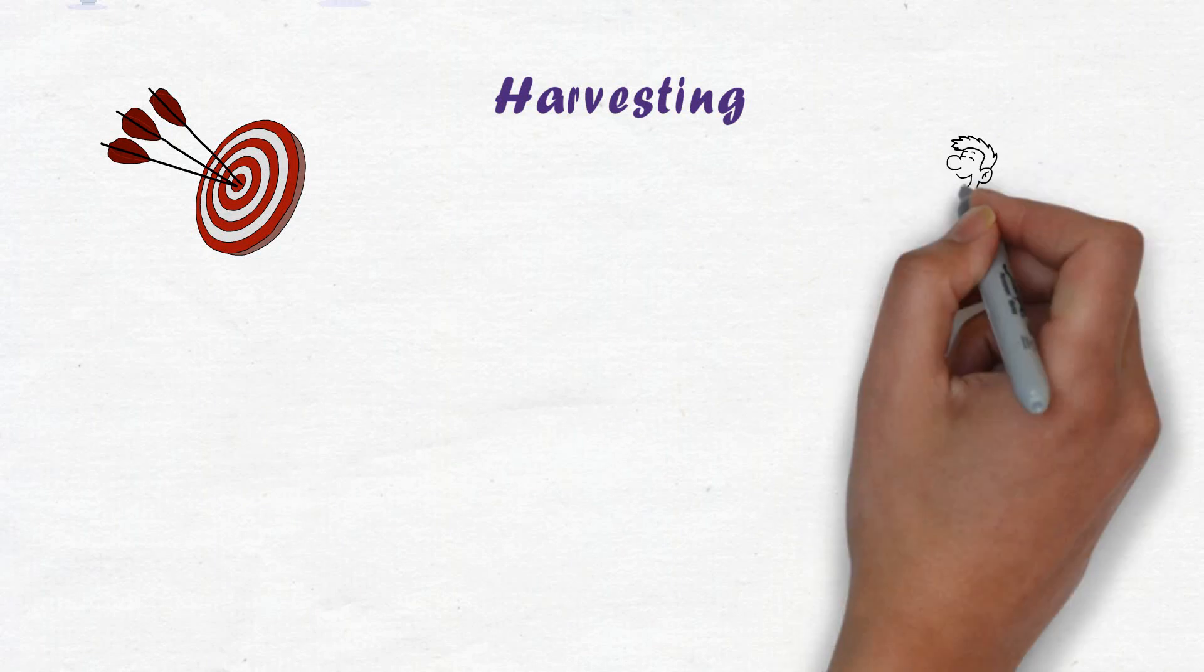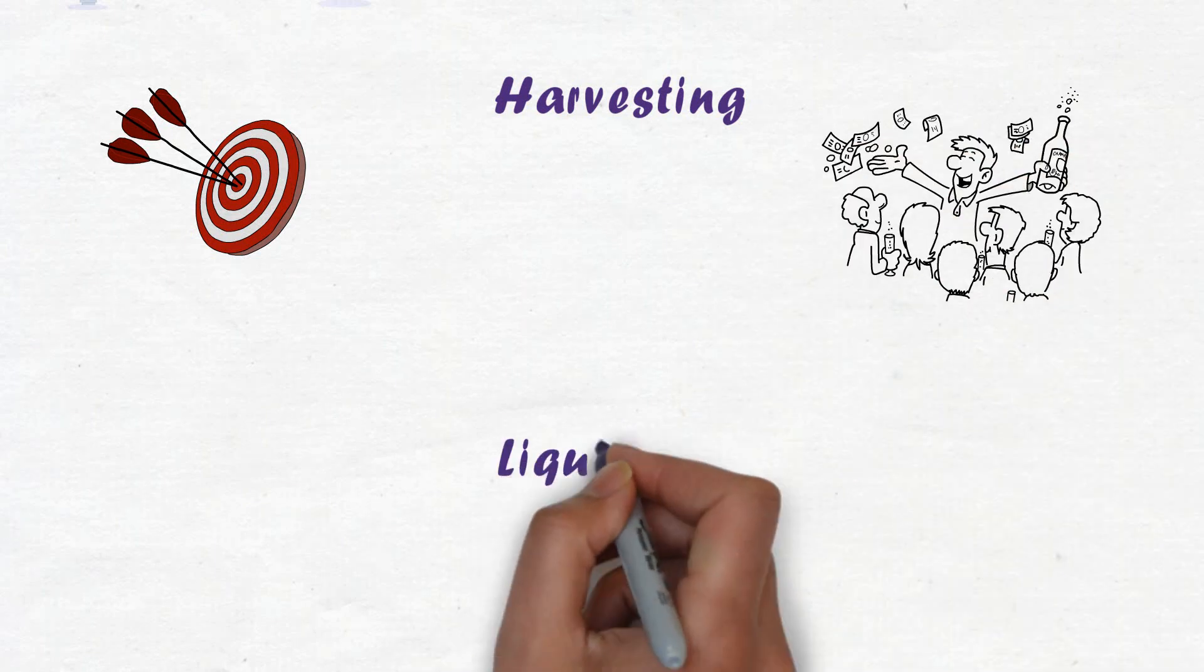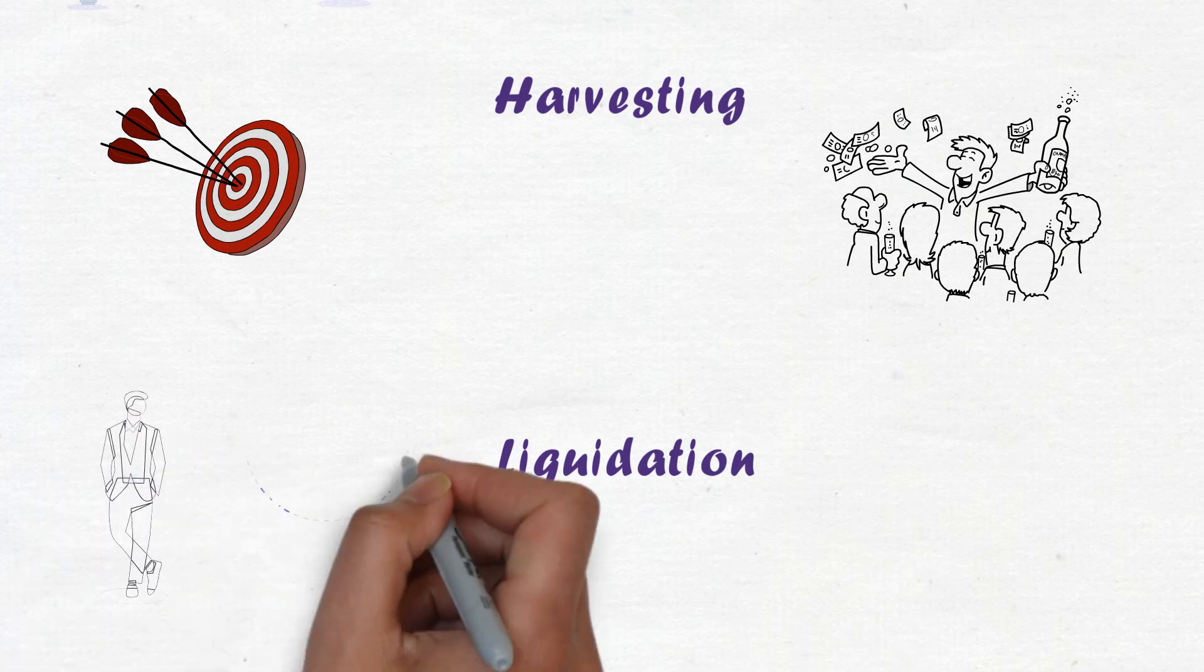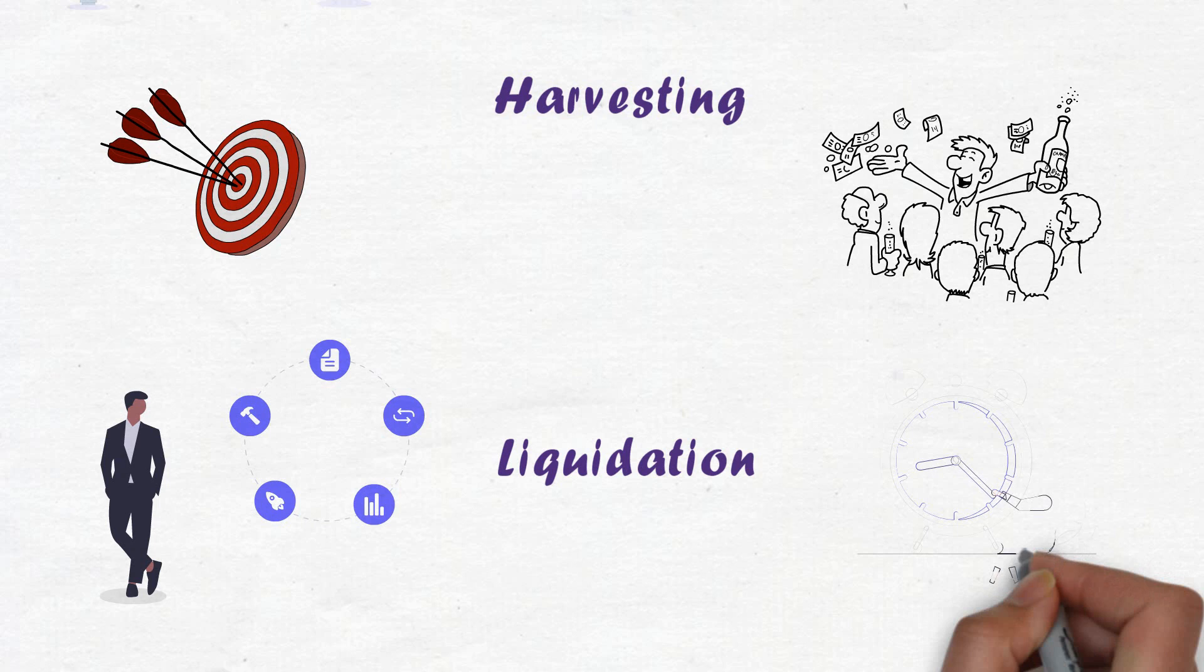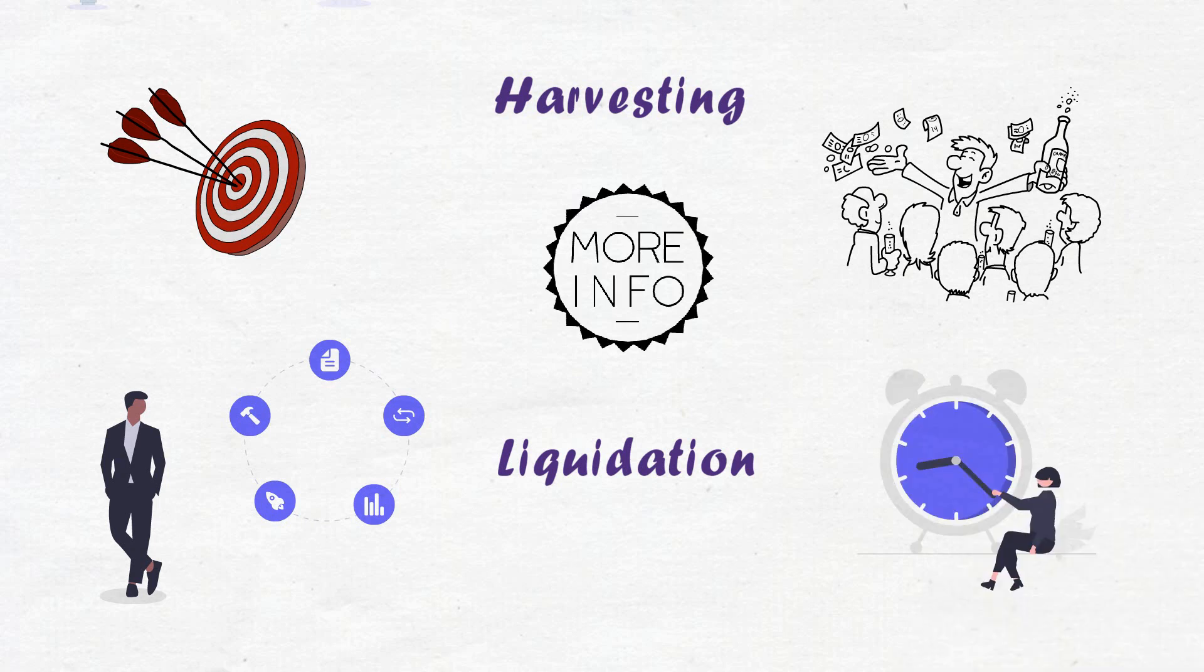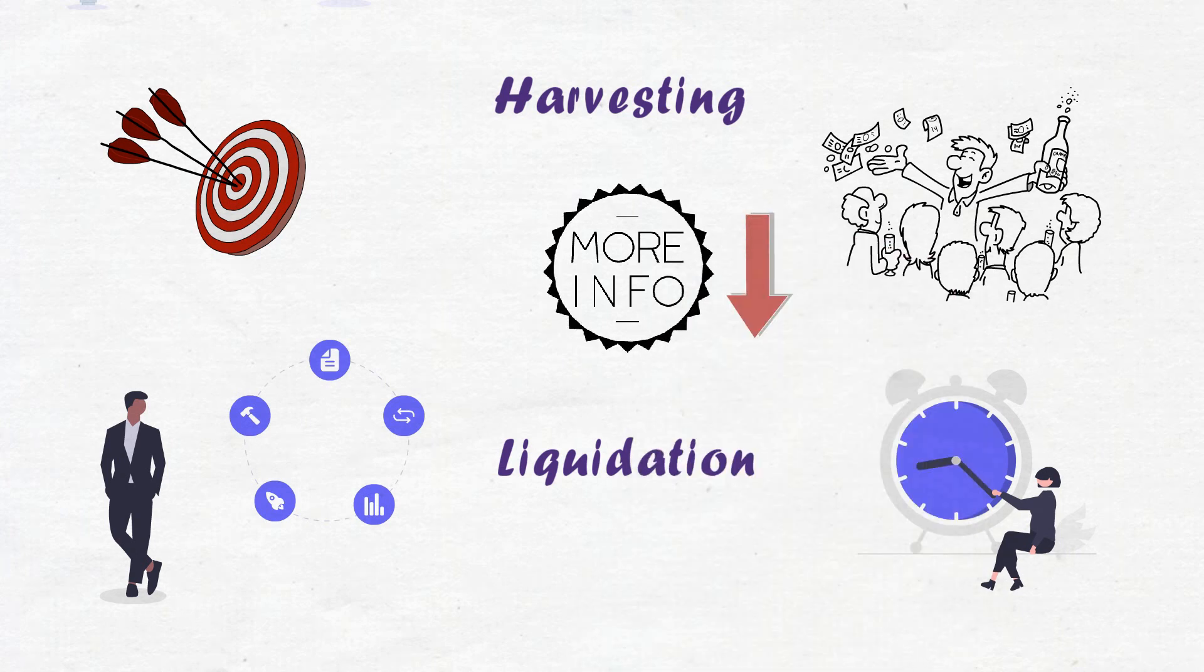Harvesting is the phase where investments are realized and cash is returned to the limited partners. Liquidation is the final stage where GP looks for an exit strategy. Keep in mind it takes 8 to 12 years to complete the entire life cycle. We have a detailed video on the private equity life cycle, please check it out, link in the description.